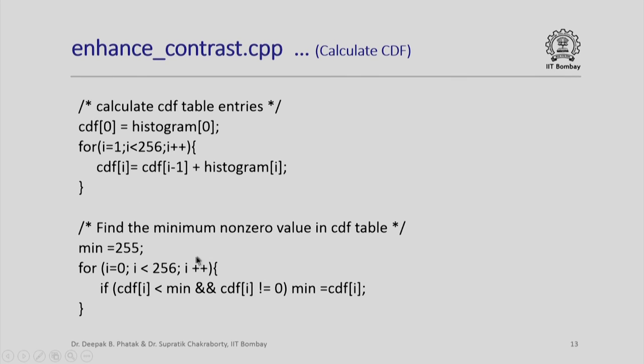Now, I find the minimum non-zero value in the CDF table. You remember that this is required in the formula for calculating the mapping of old value to a new value. I start with a minimum value of 255 which is actually the maximum value, scan the entire array of CDF and find out its minimum. Notice that I need to find out minimum for non-zero value and therefore the condition here cannot simply be ith element of CDF is less than min. I must also logically AND it with ith element not equal to zero. If this condition is satisfied by a pixel, I put that value as the new minimum.